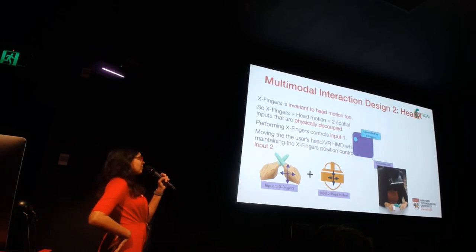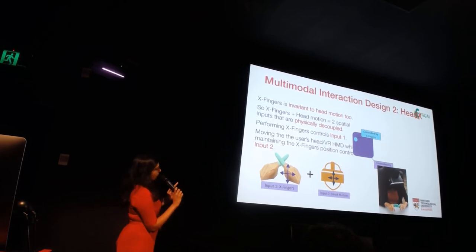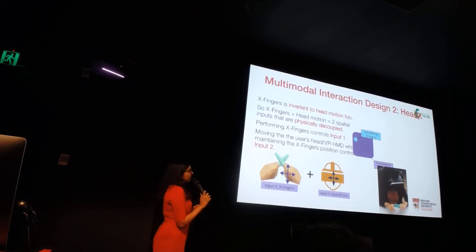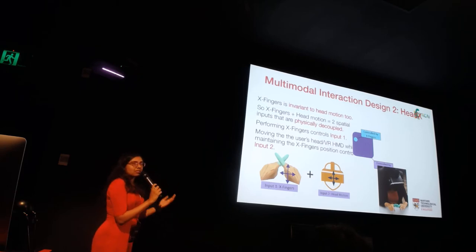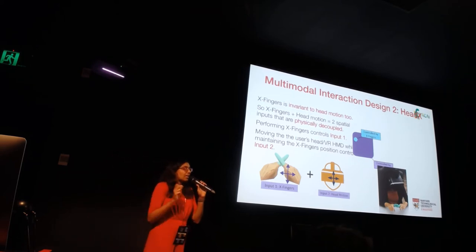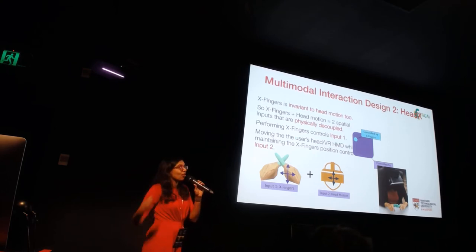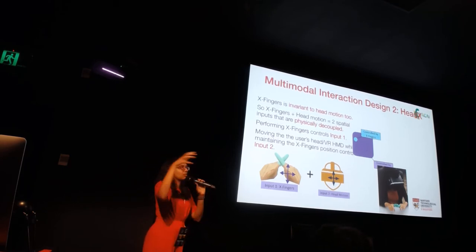The second interaction method we propose also arises from this concept of stability with respect to viewpoint changes. If your head moves and assuming the hands are still in view of the camera, this will still not affect the position of X fingers. So the head is used as an additional input modality. HeadX combines head movement along with X fingers to create another multimodal input method which controls two separate inputs — input one is controlled by X fingers and the second input is by head motion.